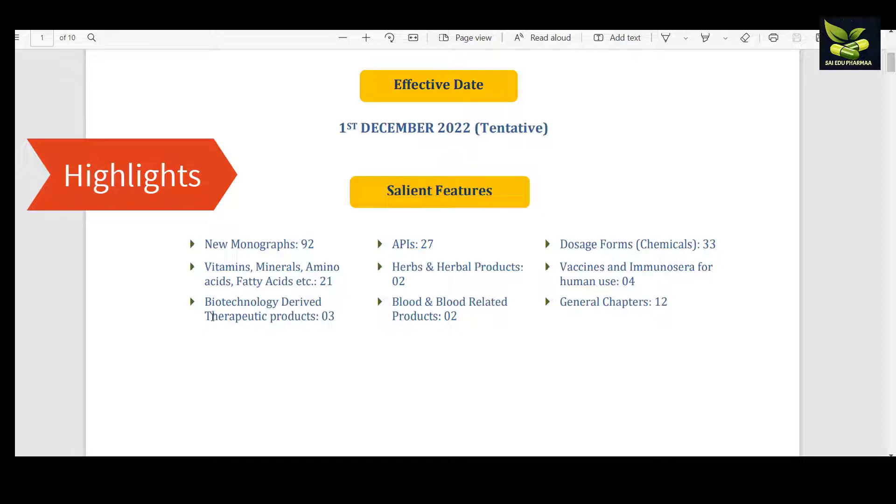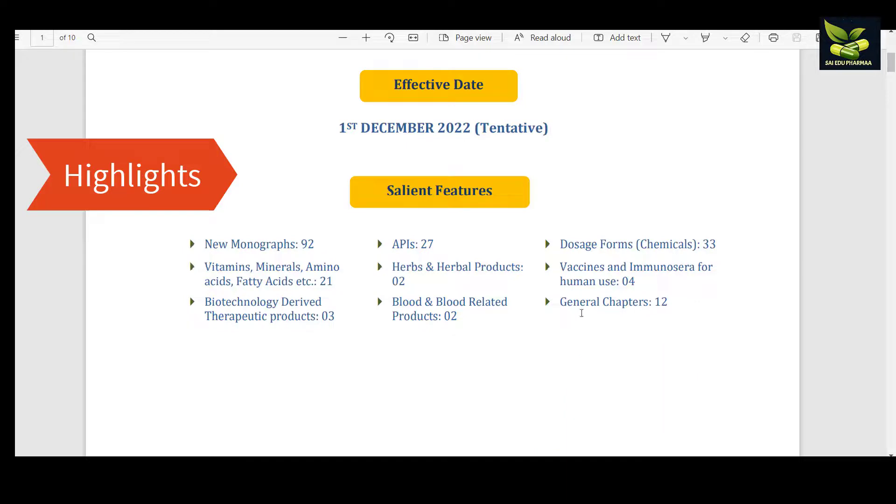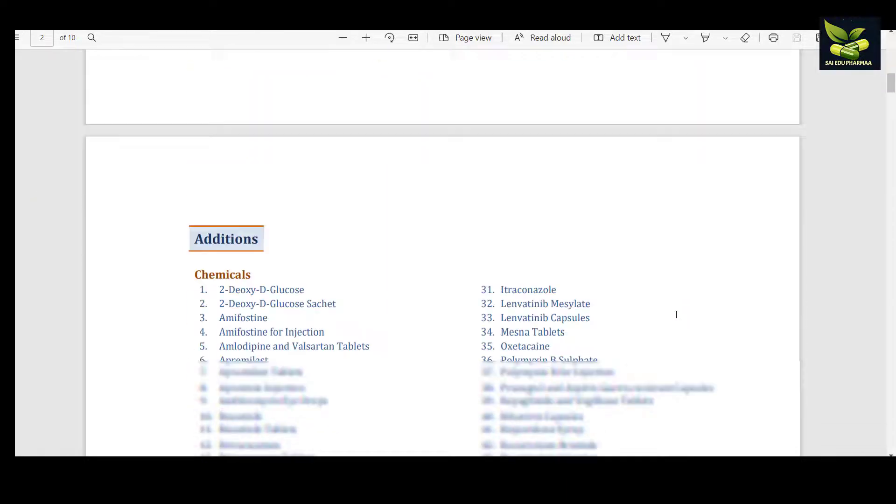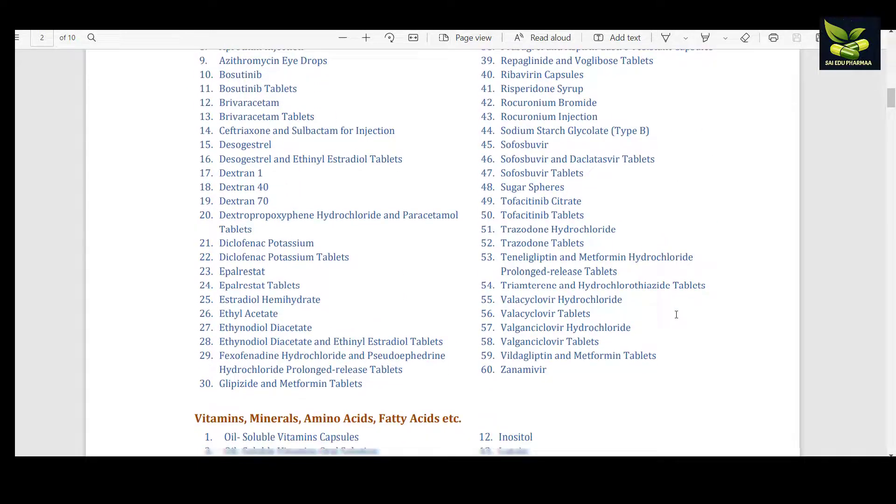Biotechnology-derived therapeutic products are 3, herbs and herbal products are 2, blood and blood-related products are 2, vaccines and immunosera for human use are 4, and general chapters are 12. These are the important chemicals which have been added.